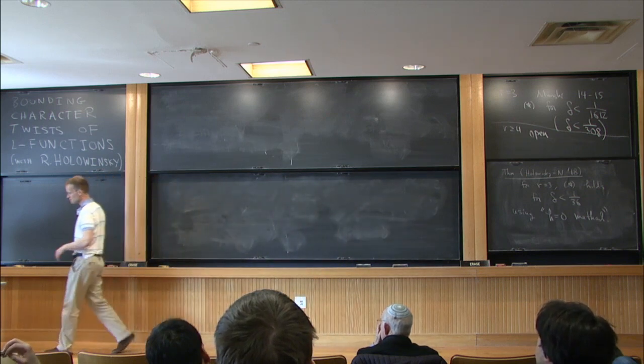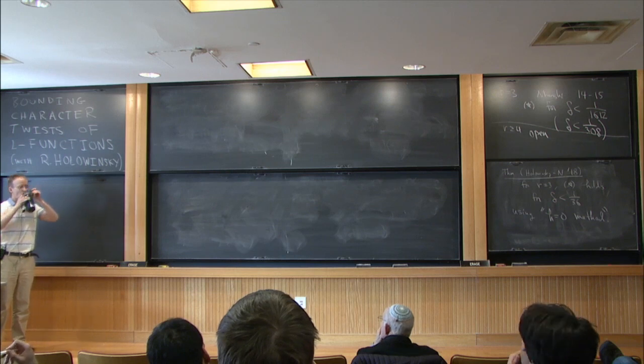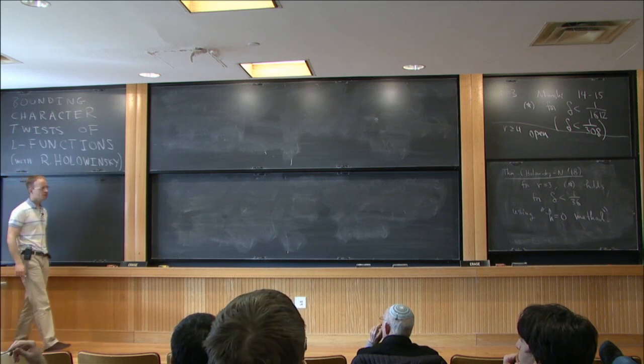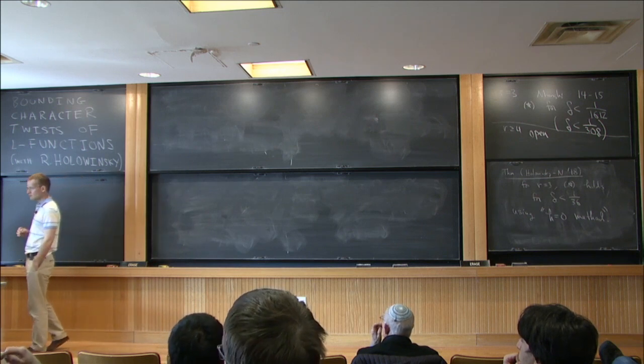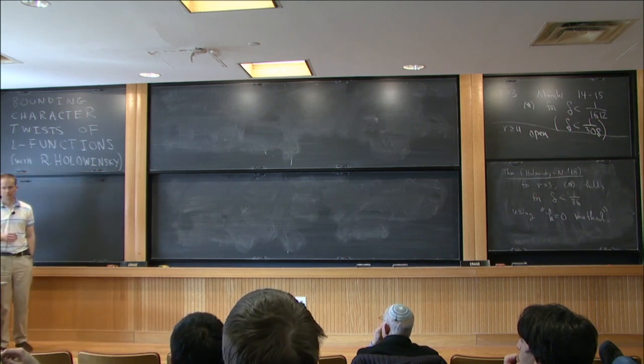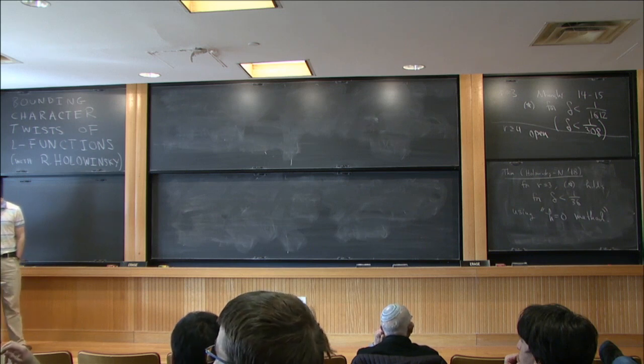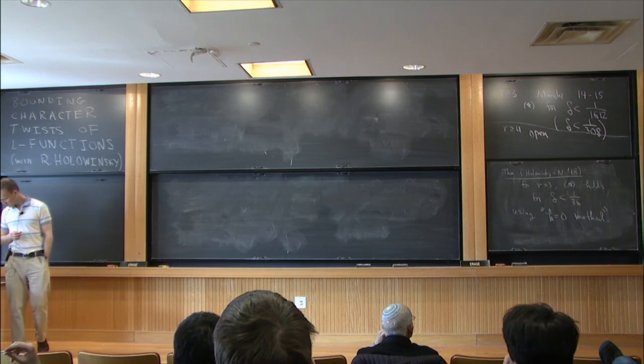Are there any questions so far? How does this exponent of 1 over 36 compare to the best bounds for the quadratic character? They're worse. Quadratic character, maybe 1 over 8.